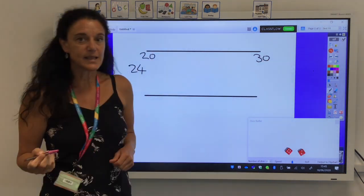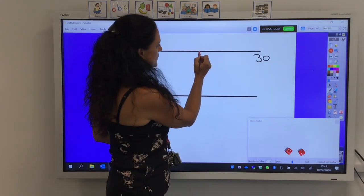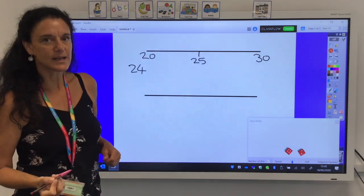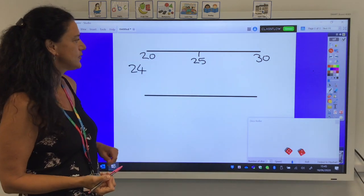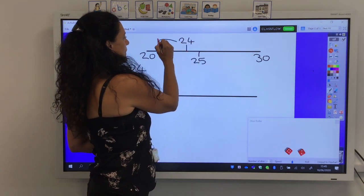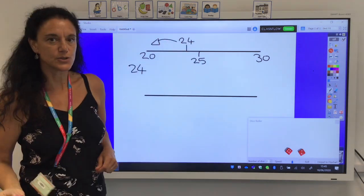I will round down to 20 or up to 30. Now to make it easy for ourselves, it's always best to find the midway point. And that would be 25. We should clearly be able to see now where 24 sits. So 24 would sit about here and we know we are going to round down to 20.